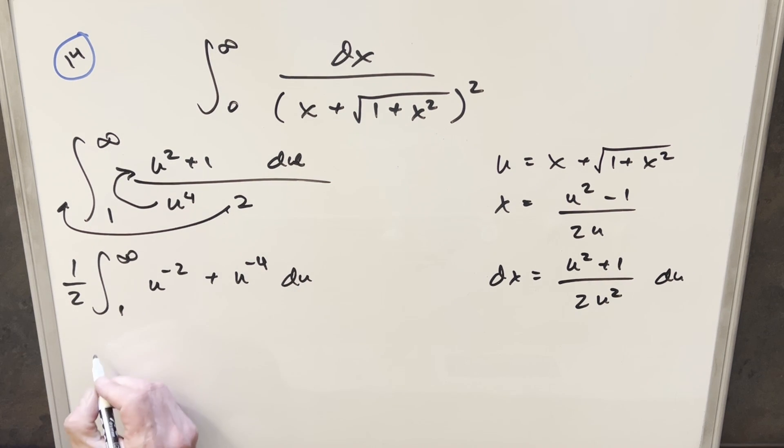But now from here, it's just power rules. So we'll have 1 half in front. Integrating this is going to give me minus 1 over u. Integrating this is going to give me minus 1 over 3u cubed. Let's just factor a minus sign out of this and turn these into pluses. And then we'll just evaluate this from 1 to infinity.